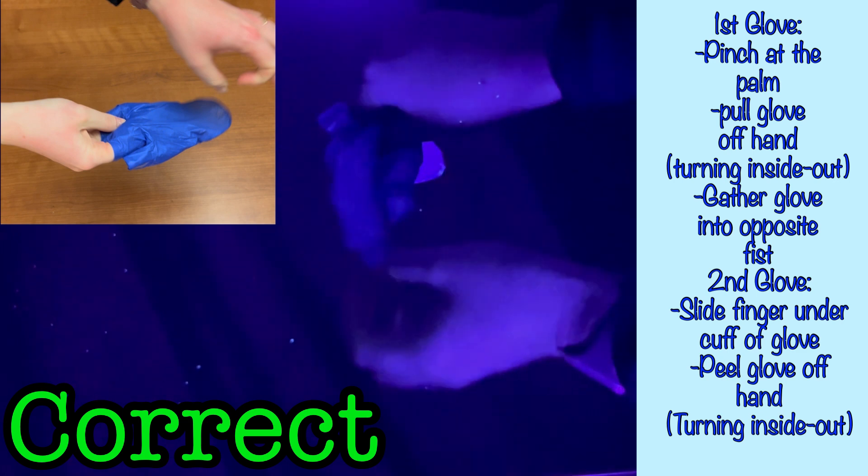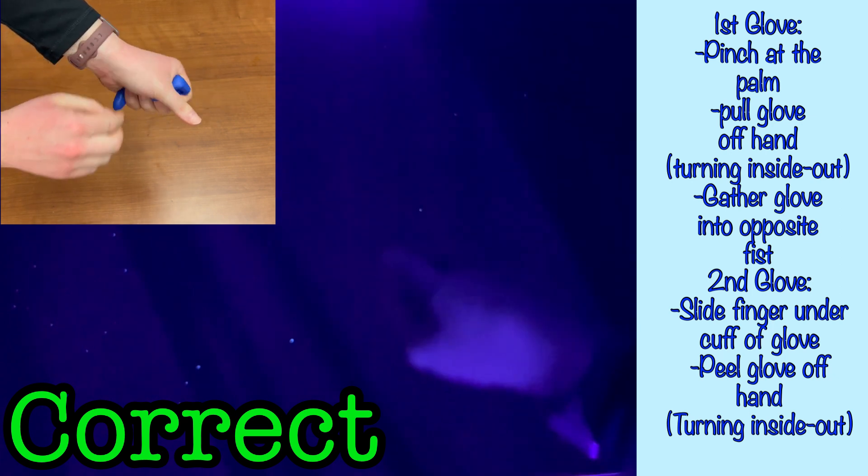By removing in this method, you have contained the first glove inside the second, and the only exposed surface of either of the gloves is the uncontaminated inner surface of the second glove. You can now handle this glove with minimal risk of contamination, and dispose of it in the garbage.